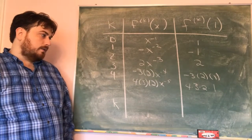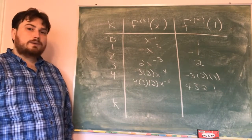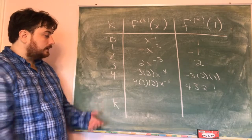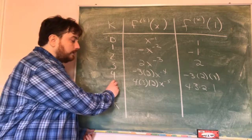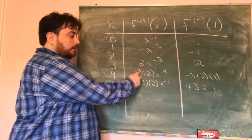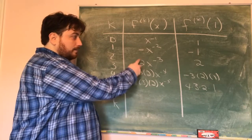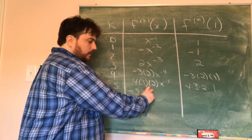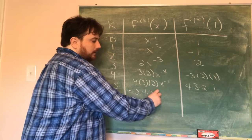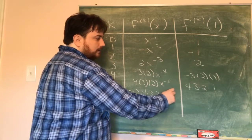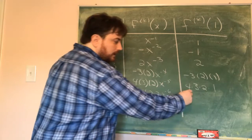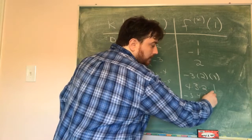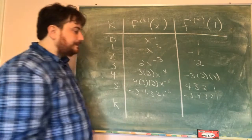Now hopefully I can see what the pattern is going to be. The fifth derivative should be negative 5 times 4 times 3 times 2 times x to the negative 6, so the value at 1 is negative 5 times 4 times 3 times 2 times 1.